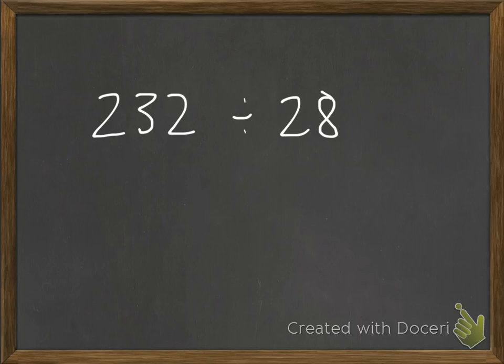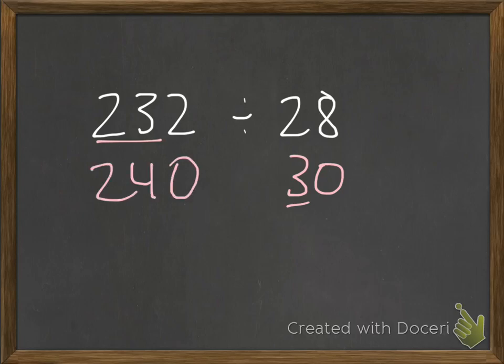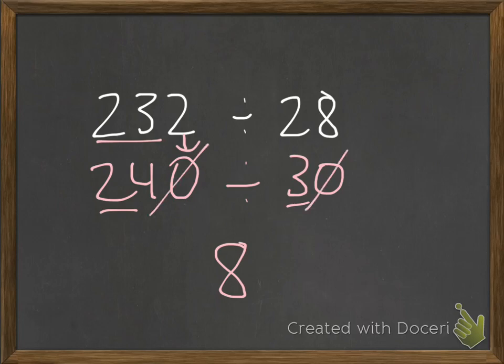Here's another one: 232 divided by 28. Since this is a two-digit divisor, we round 28 to 30. Ignoring the 0, we focus on the 3. What multiple of 3 is closest to 23? That's 24. So we round the dividend to 240, and now we have 240 divided by 30. The basic fact is 24 divided by 3 equals 8. Since there is one 0 in each number, they cancel each other out, and the estimated answer is 8.